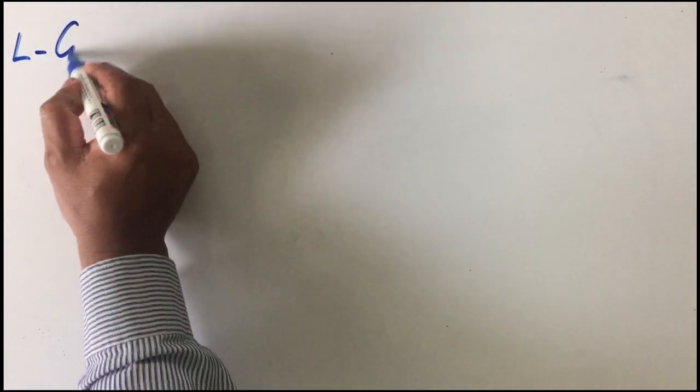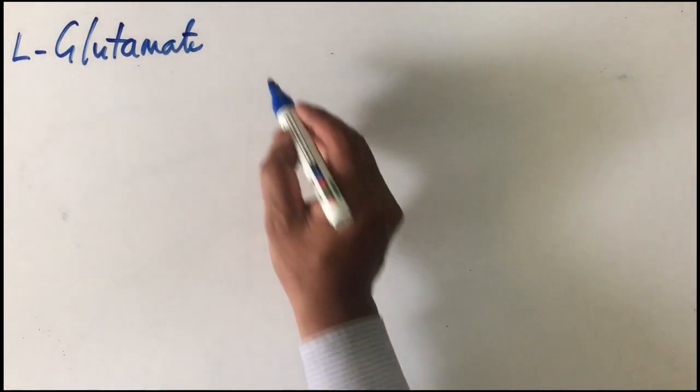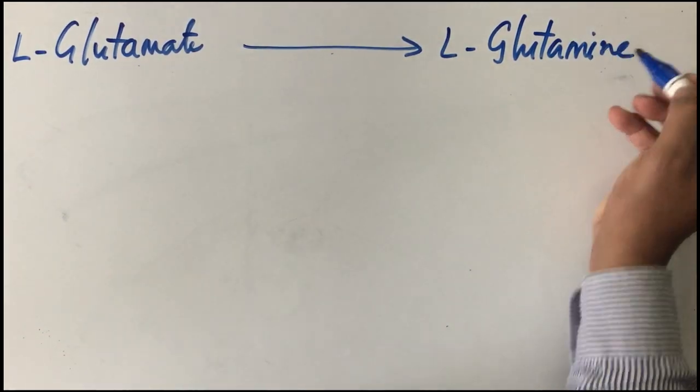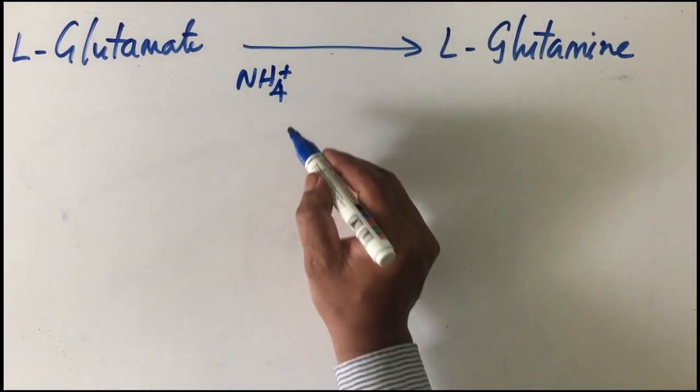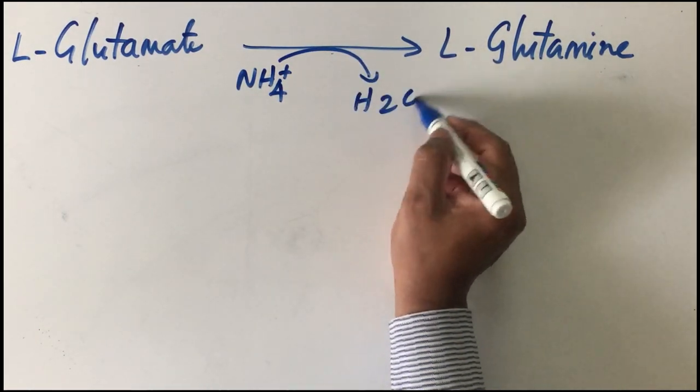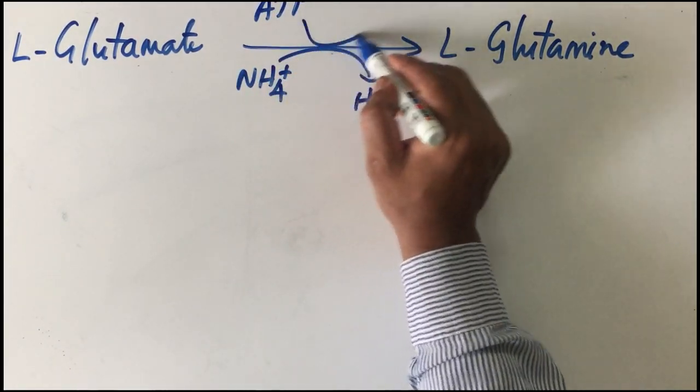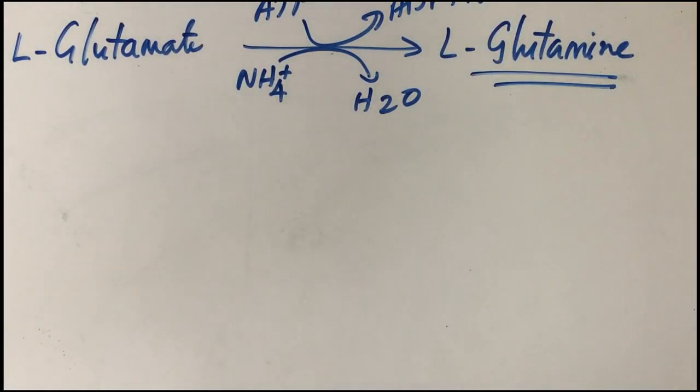Let us see how it is transported as glutamine. L-glutamate, which is produced through transamination, is converted to L-glutamine. An amino group is added—NH4+ is added and a molecule of water is released. This is an energy-requiring process, so ATP is added and converted to ADP and Pi. Glutamine is formed.